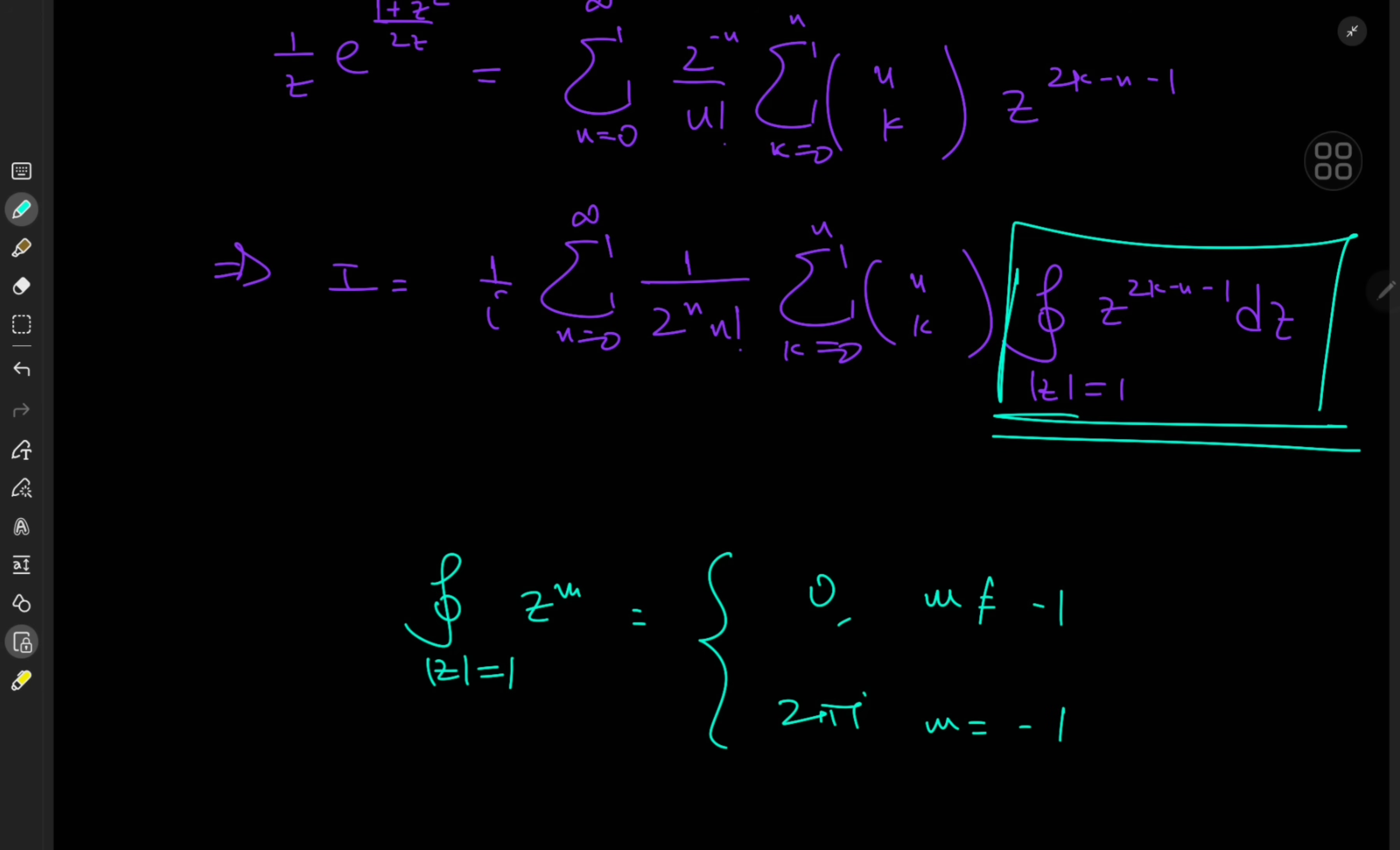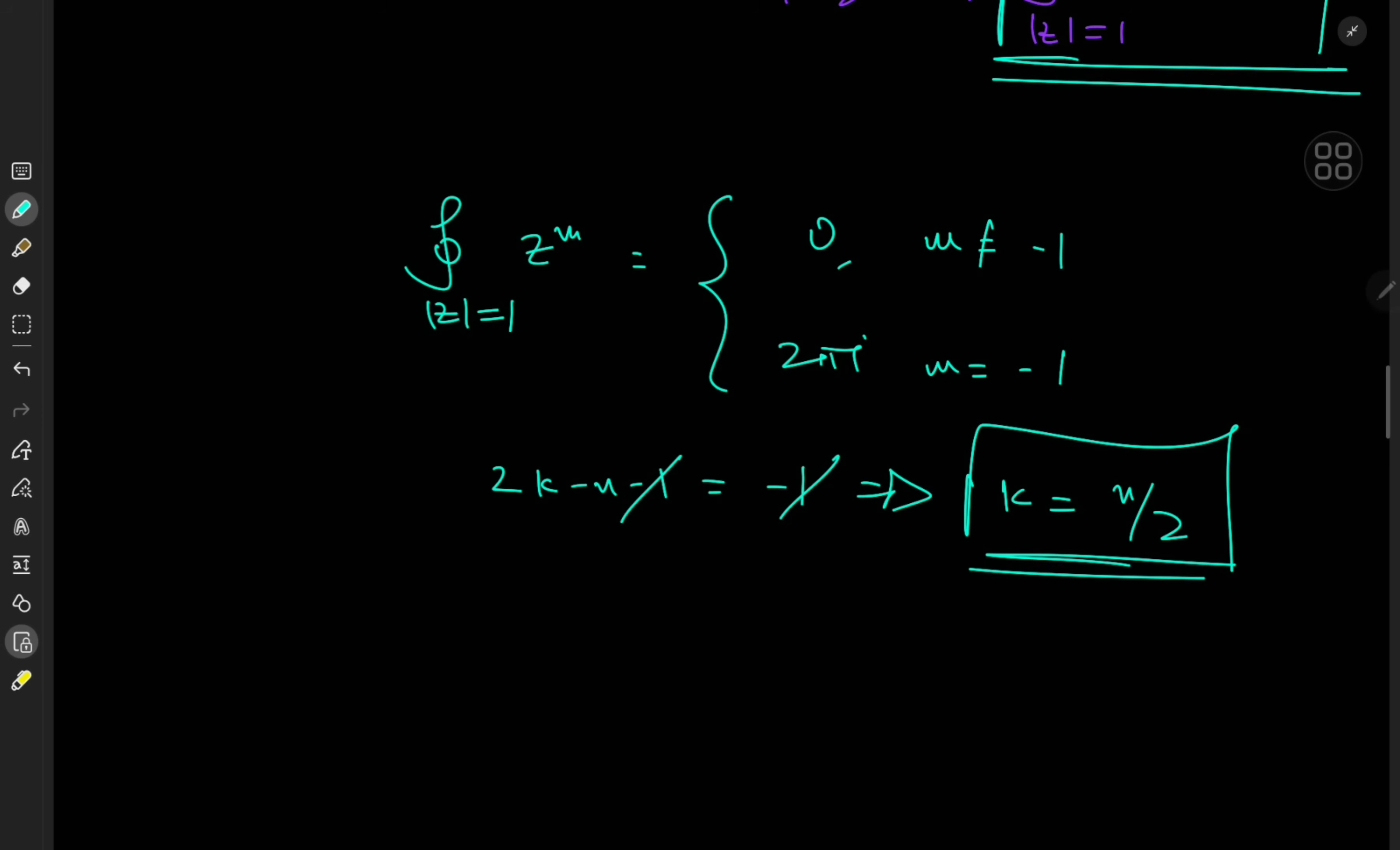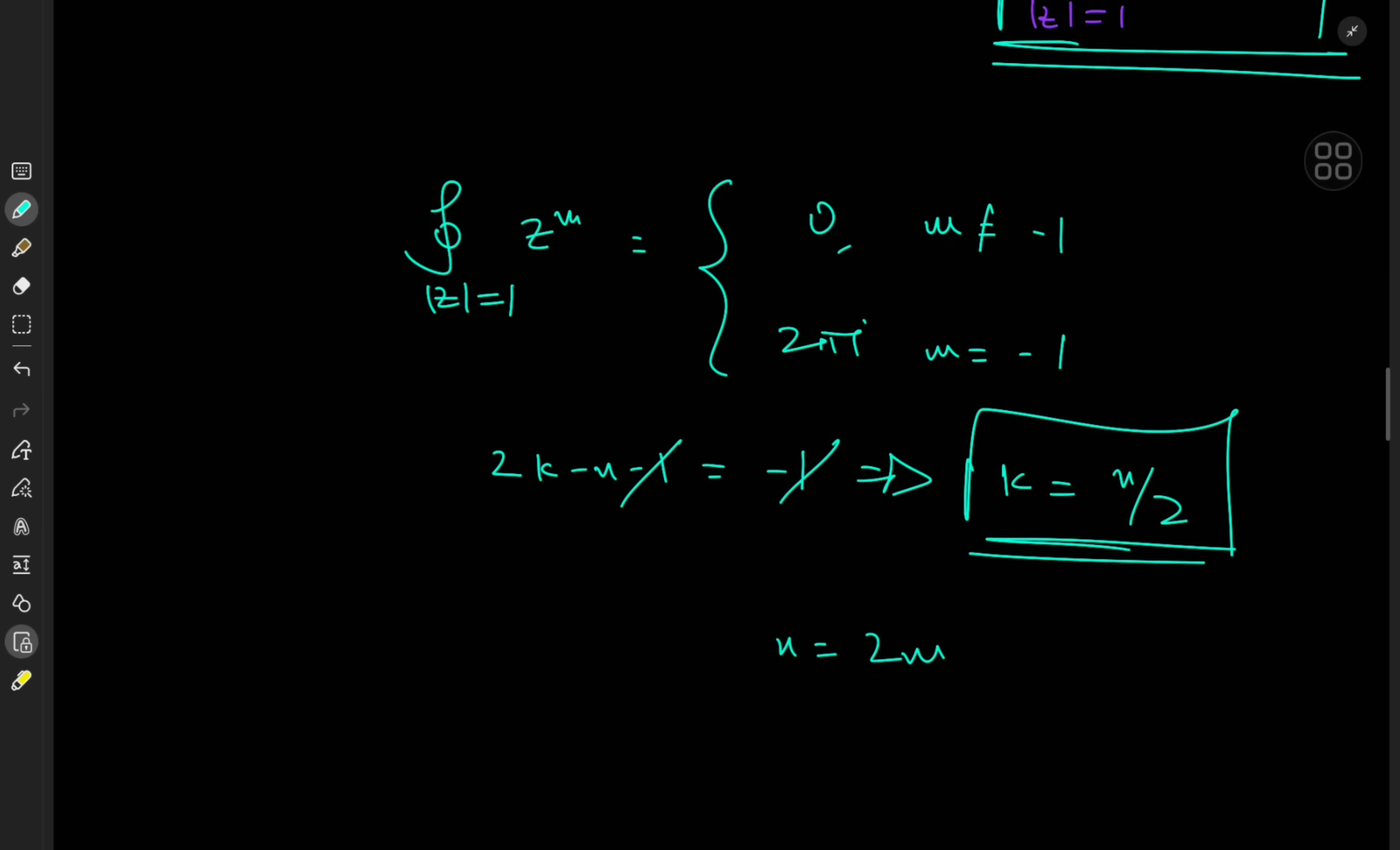Okay, cool. That means we have only one surviving term for k in this series over here. And that is for the case of 2k - n - 1 equal to -1, which implies that k here is equal to n/2. But wait, there's a catch. k needs to be an integer. And for that to happen, we need n being equal to 2m, where m is a non-negative integer. So the only surviving terms are even values of n.